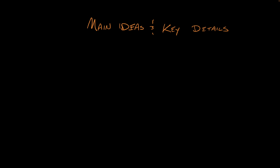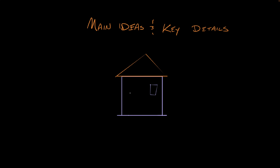We're talking about supporting a main idea with key details. Let's say I'm building a house. If I want the house to have a roof, it needs walls. The walls support the roof. Writing works the same way — if an author wants to express a main idea, to build a roof, they need to support that idea with details. The walls that hold that roof, that idea, upright.